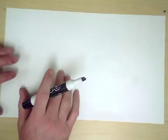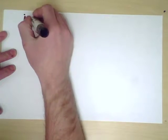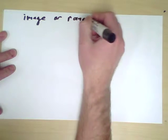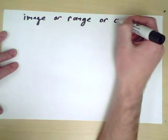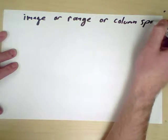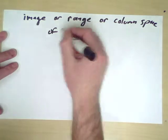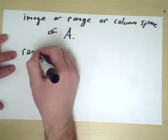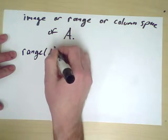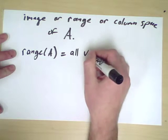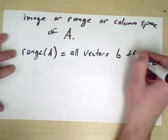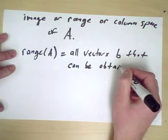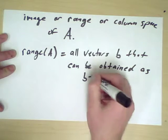The reason for this level of abstraction is that we can really think about the idea of the image, or the range, or as we will call it, the column space of the matrix A.